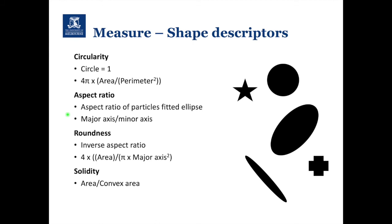We can also read out shape descriptors. Circularity: a perfect circle is 1 and anything less is below 1. Aspect Ratio fits an ellipse to the identified particle and reads out the major and minor axis. Roundness is the inverse of aspect ratio. Solidity is your area over your convex area — for something circular the solidity is 1 or very close to 1, whereas for a star structure it would be less than 1. The area is the region within the object, and the convex area is like wrapping an elastic band around it — that enclosed area is the convex area. This gives a nice complexity readout for shape.